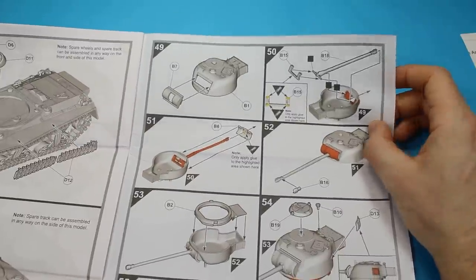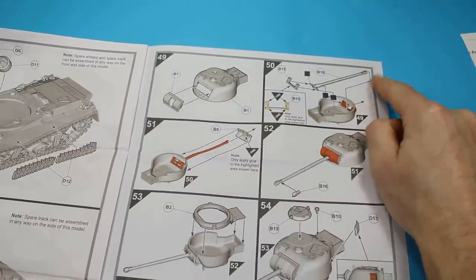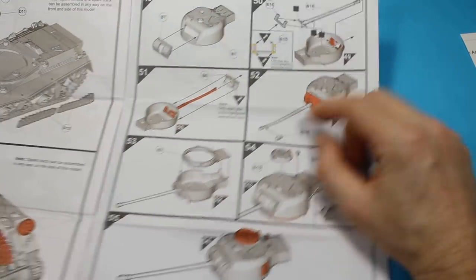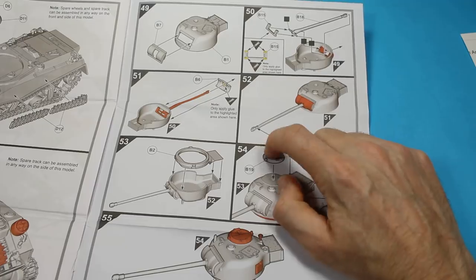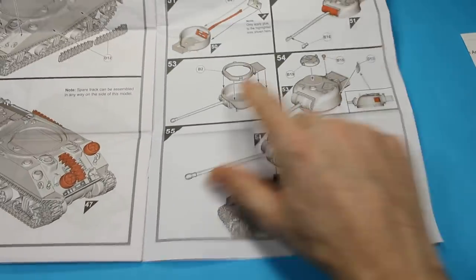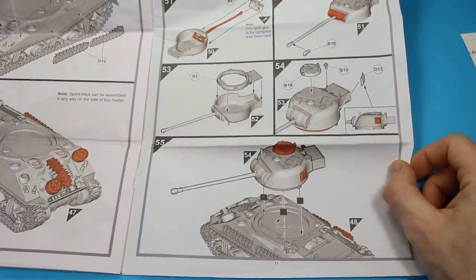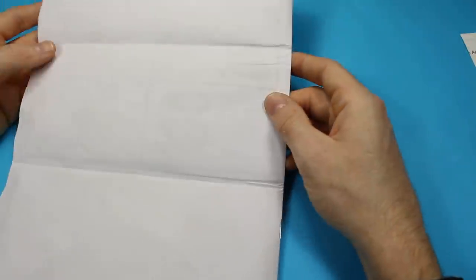Then we're straight onto the one-piece turret, with the one-piece gun barrel, with a two-piece muzzle brake, and that all goes on nicely, simple enough, as you can see. There's the two-piece muzzle brake, so just a small seam to sort out there. Then we're putting on the bottom of the turret, final parts going on with the cupola, and the aerial mount, and then we attach it. So that's the easy way through.